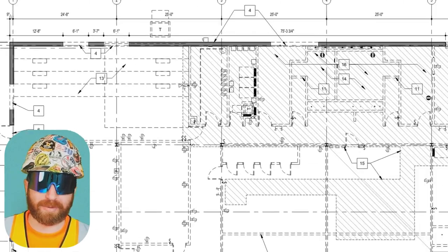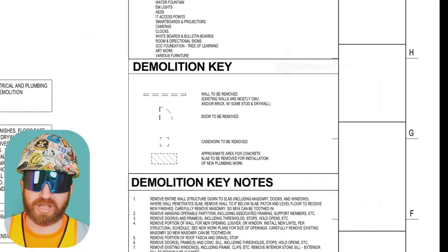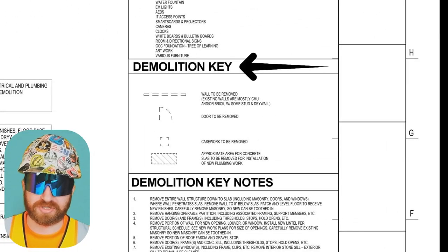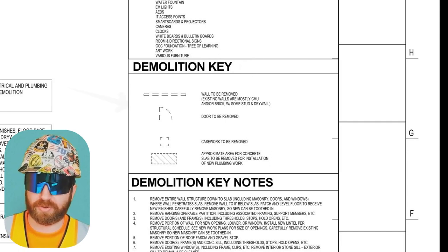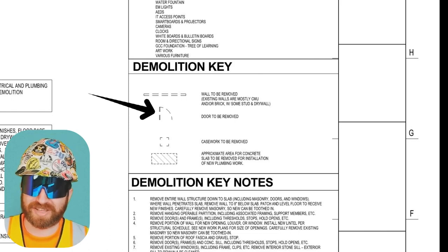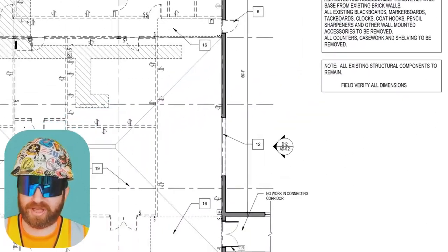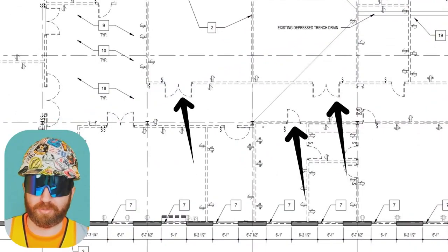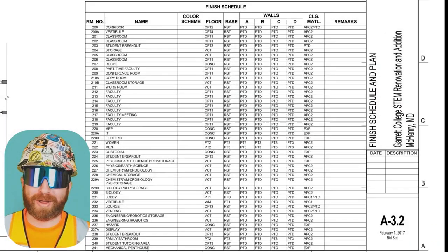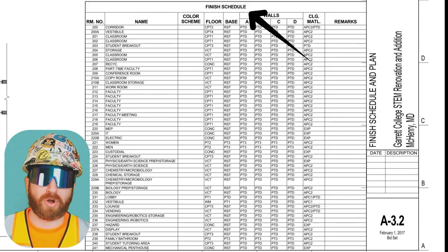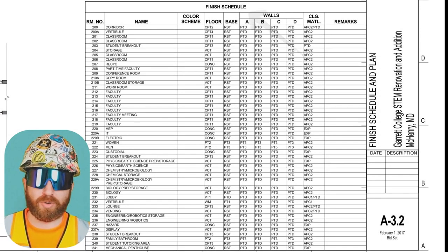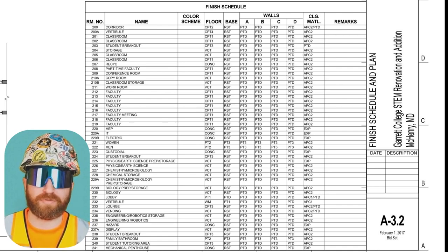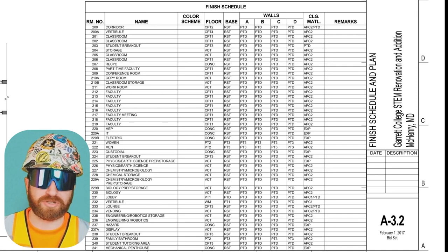This demolition plan also has a demolition key — a legend showing symbols and the associated scope with each symbol. For example, a symbol of a door means 'door to be removed.' Looking at the plan, we can see a series of doors and walls that need to be removed as part of this demolition. On my way back to the floor plan, I stumbled across a schedule in the drawings. This isn't a project schedule with activity durations, but rather a chart the architect or engineer uses to communicate information efficiently.